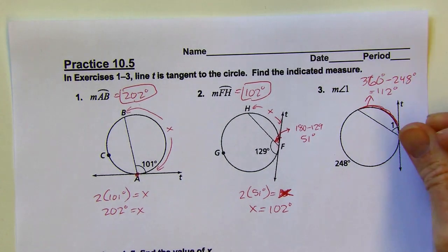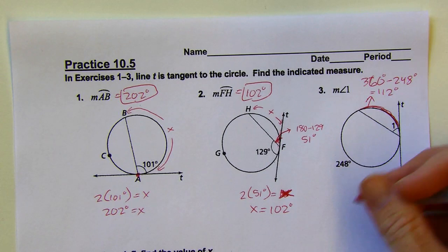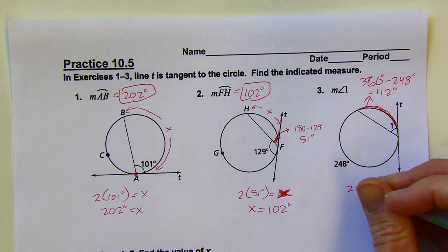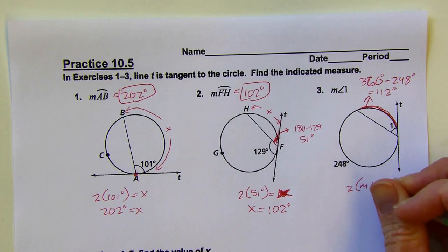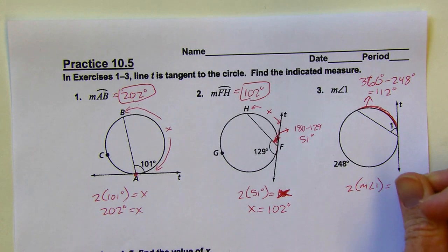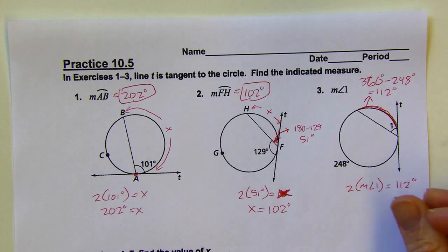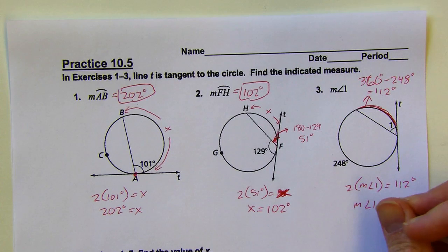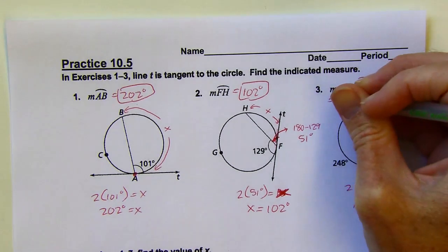Now I can say 2 times the measure of angle 1 is going to equal 112 degrees. Then I just divide by 2, and I'm going to get 66 degrees. And that's my answer here.